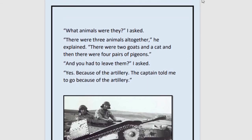In the last class, we saw that the old man and the narrator were talking about something — the narrator was asking the old man about his animals. Now he goes on asking: what animals were they? There were three animals altogether. This is a very important part — questions will come from this part of the chapter.